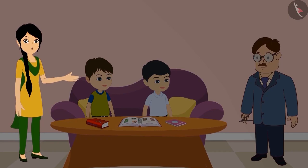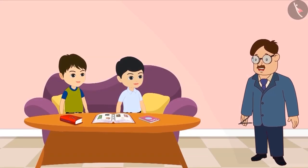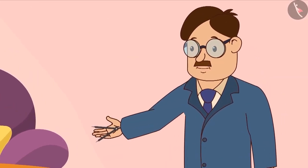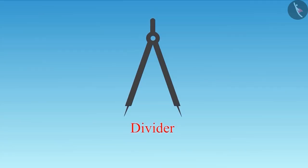To find out the correct answer, Golu went to their uncle and asked him about the angle being made in the picture of the seesaw. Their uncle showed them a strange object. Children, do you know what this is? This is called a divider.